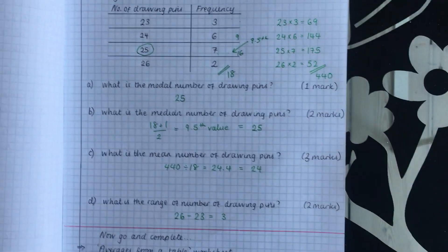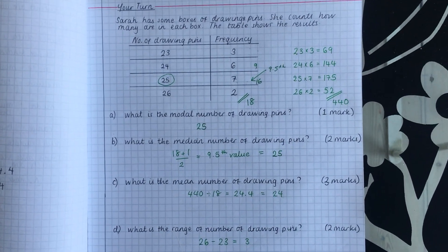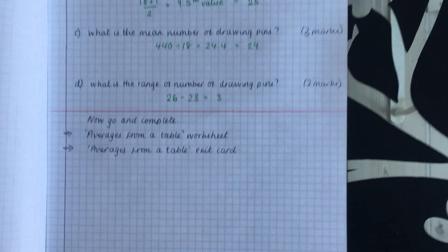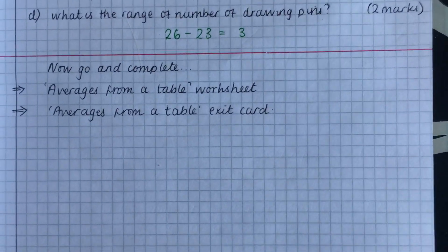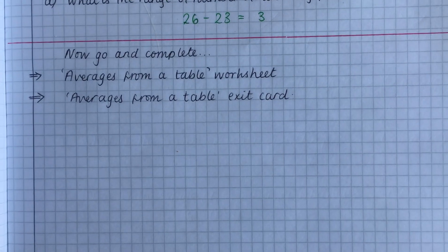So make sure that you've got all those corrections done if you need to correct anything. And then I'd like you to move on to the averages from a table worksheet. Mark yourself using the solutions and then averages from a table exit card.